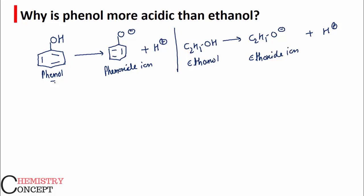The acidic strength of phenol or ethanol will depend upon the stability of their conjugate bases. That means the acidity of phenol will depend upon the stability of the phenoxide ion formed after releasing a proton, and the acidic strength of ethanol will depend upon the stability of the ethoxide ion formed after releasing a proton.